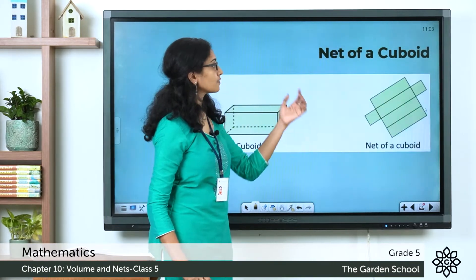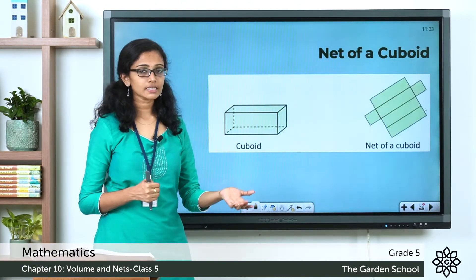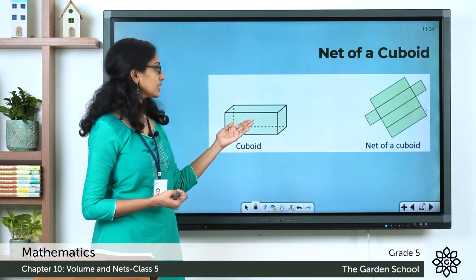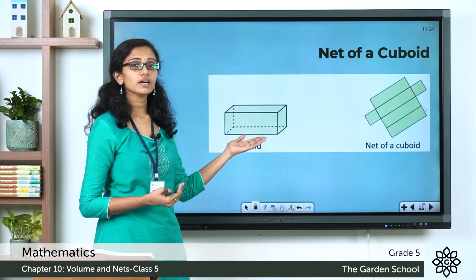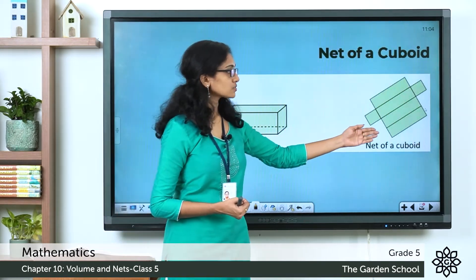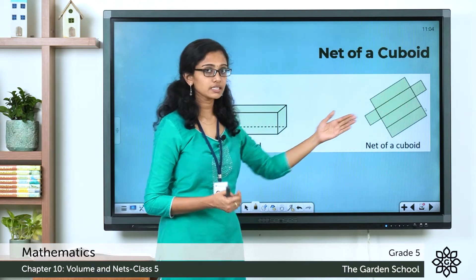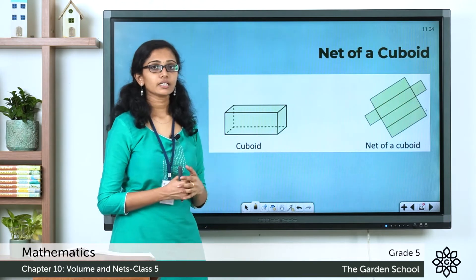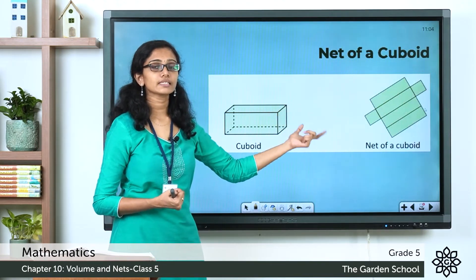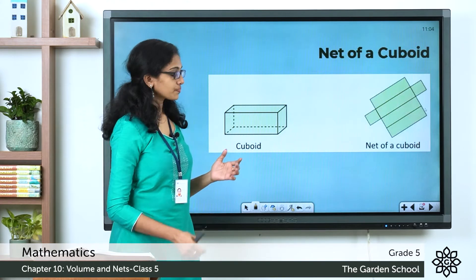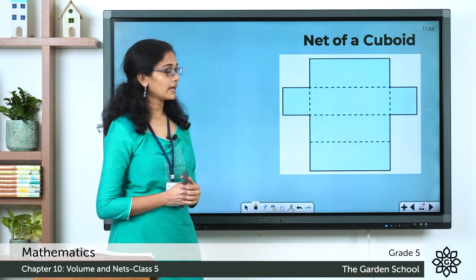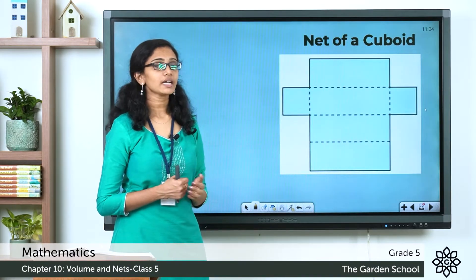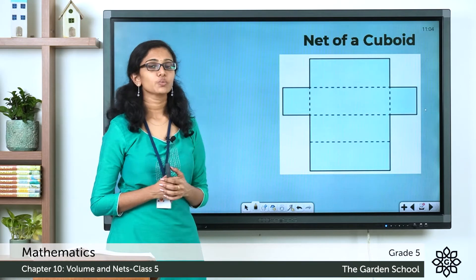Now we'll see the net of a cuboid. We have already seen the nets of a cuboid in the beginning of this class. The cuboid has got six faces and it can have both rectangular and square faces. In the net also you can see rectangular as well as square faces, and the total number of faces in the solid shape as well as the net match, and the shapes of the faces match too. If you fold this net along the dotted lines you will get a closed cuboid.